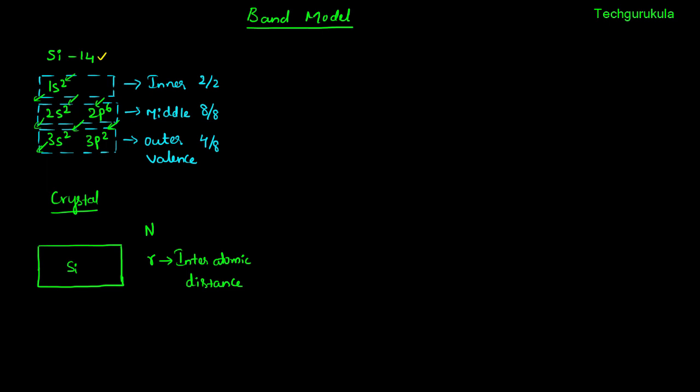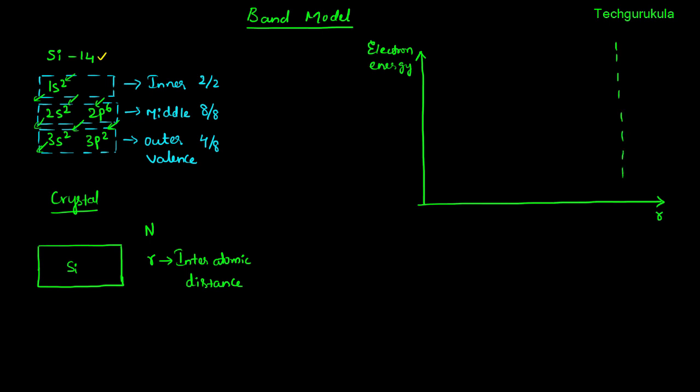We will do a hypothetical experiment to understand the energy levels in crystalline silicon. We assume the interatomic distance is variable and in our control. First, we assume the interatomic distance to be very high such that each silicon atom in the crystal is essentially an isolated silicon atom. Let the x-axis be the interatomic distance r and the y-axis be the electron energy. The interatomic distance is so high that each individual silicon atom doesn't feel the presence of the others — they are literally isolated.